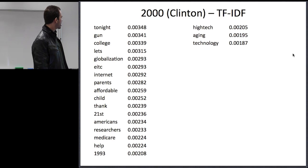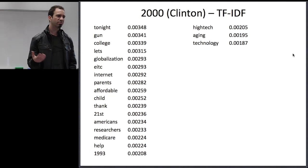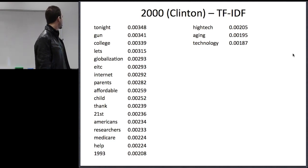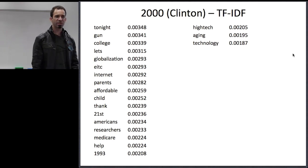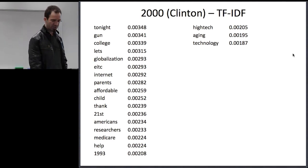These are the top words for the 2000 State of the Union speech by Bill Clinton. You can sort of get an idea of what he's talking about: tonight, gun, college, globalization, internet, affordable, child, 21st, Americans, Medicare, help, high-tech, aging, technology. Let's see what you all thought this is about.